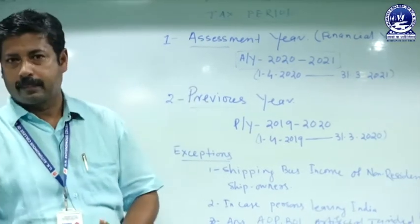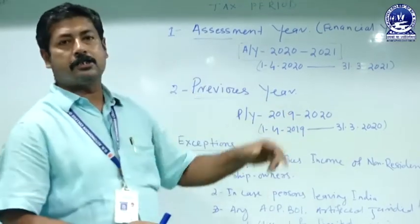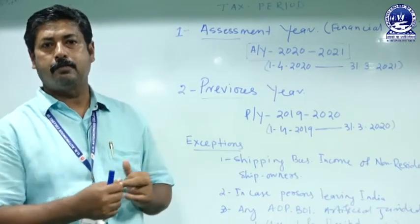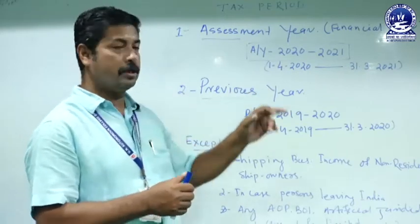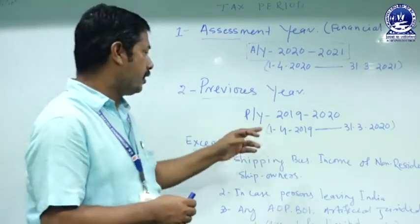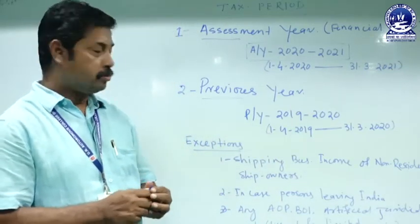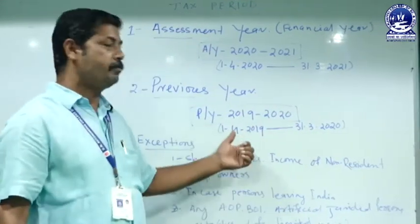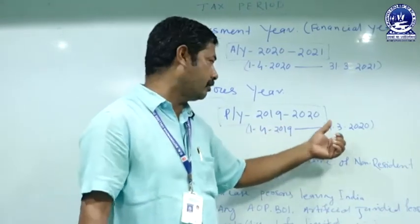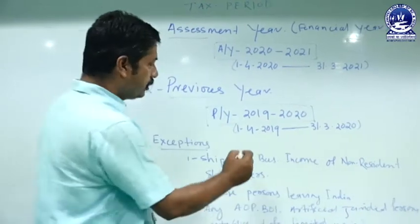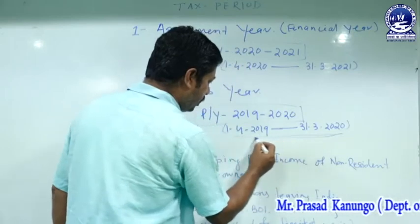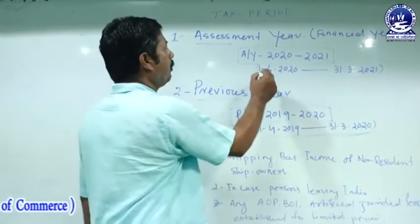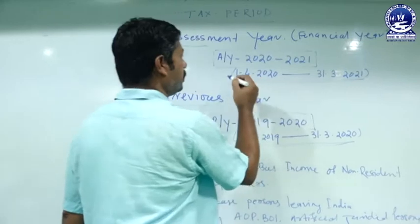Here is the previous year. The previous year is the year immediately preceding the assessment year or financial year. This period is also a total of 12 months, starting from 1st April and ending with 31st March of the next year. The current previous year is 2019–2020, starting from 1st April 2019 and ending with 31st March 2020. Within this period, the person derives income — the total income of the person — and the person is liable to pay the tax in the assessment year.